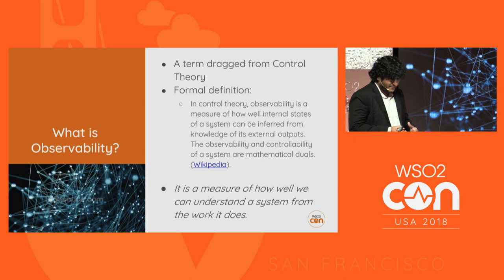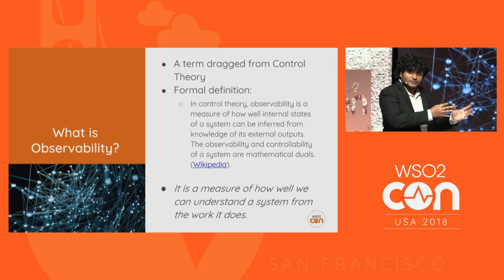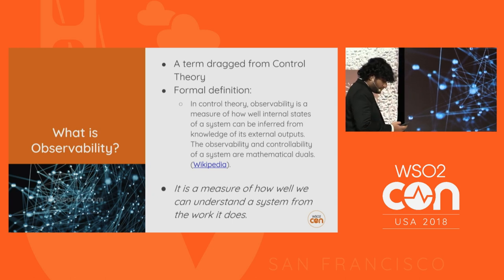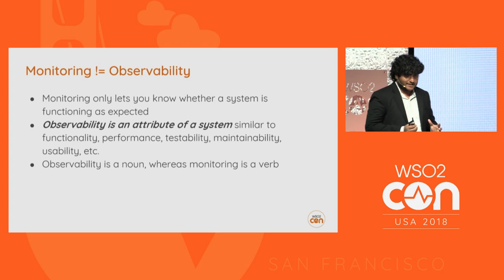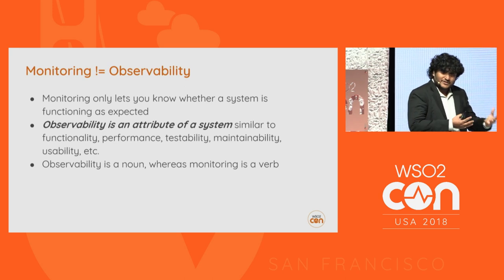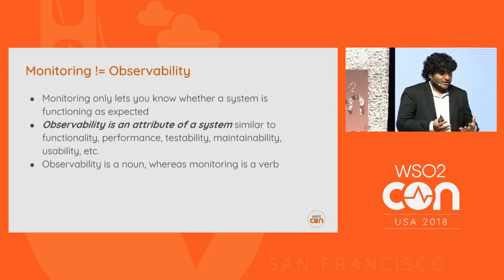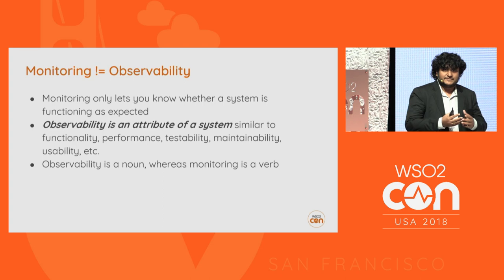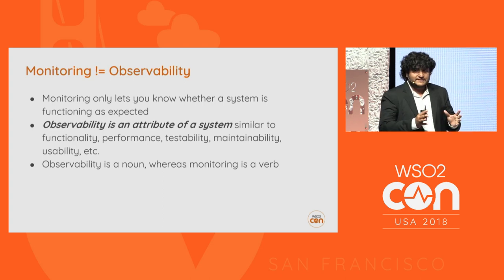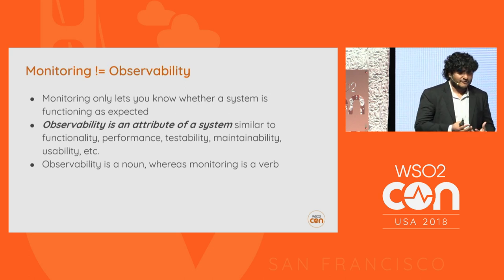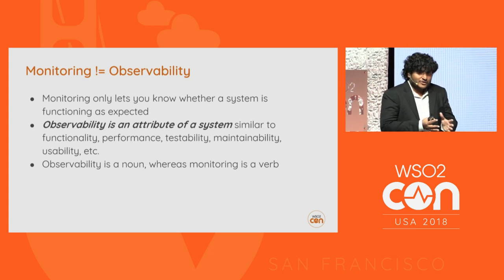If you have a system, you want to see how things are working, the status of it and so on, by looking at the information we get out of it. And monitoring is not the same as observability — monitoring actually comes under observability. Monitoring is basically saying how the system is working, whether it's working as expected. Observability is an attribute of the system, like performance, testability, and maintainability.